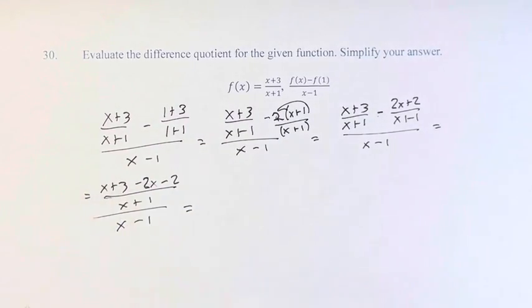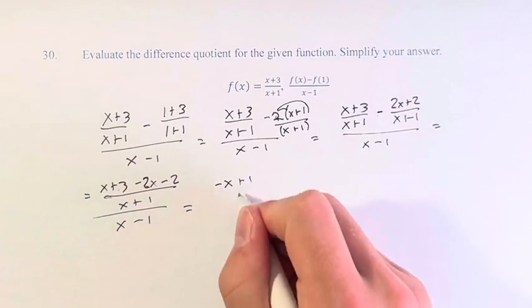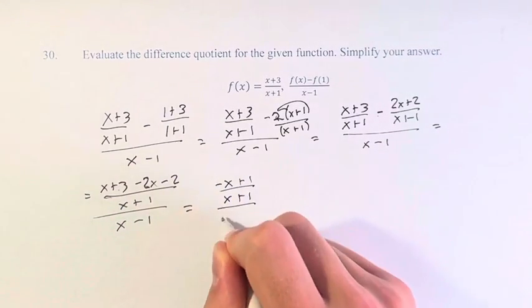So we have x minus 2x is negative x, plus 3 minus 2 is plus 1, over x plus 1, over x minus 1.